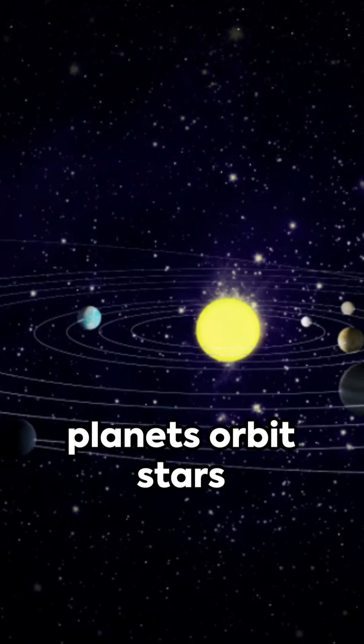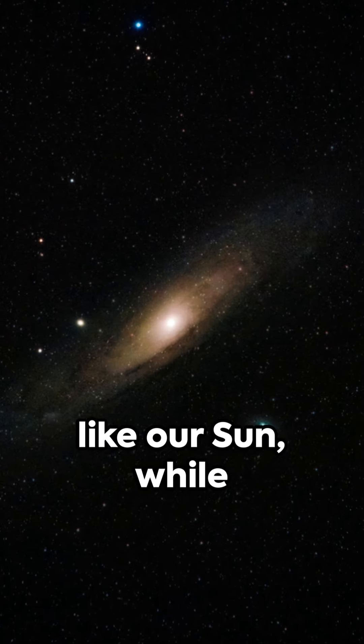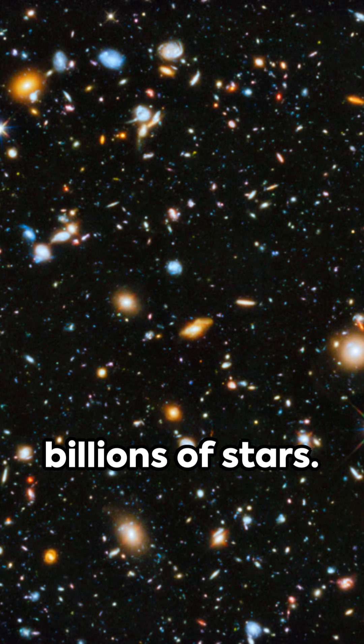Moving outward, planets orbit stars like our sun, while stars cluster into galaxies containing billions of stars.